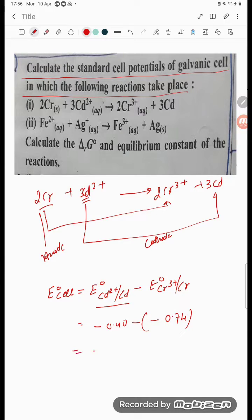Now it is -0.40 plus 0.74, so how much is it going to be? What value are you going to get? It is going to be 0.34 volts. So this is our required answer.